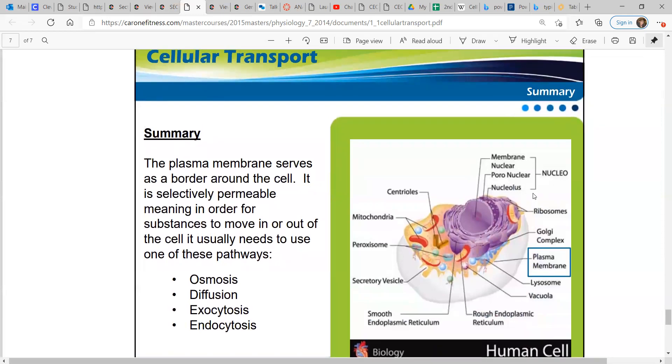In summary, the plasma membrane serves as a border around the cell. It is selectively permeable, meaning in order for substances to move in or out of the cell, it usually needs to use one of these pathways: osmosis, diffusion, exocytosis, or endocytosis.